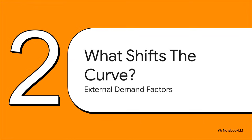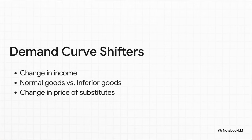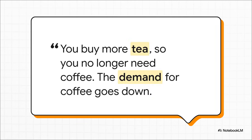So if a price change doesn't shift the curve, then the obvious next question is: what does? What are these mysterious external factors powerful enough to completely redraw the demand line? Here are the main culprits. A big one is a change in your income — for most things, what we call normal goods, if you get a raise, you buy more of them and your whole demand curve shifts to the right. The opposite is true for inferior goods. Another great example is substitute products. Think about tea and coffee — the classic substitutes. If tea suddenly gets way cheaper, a bunch of people will start buying more tea instead of coffee. So their overall demand for coffee just drops. And here's the punchline: the price of coffee didn't change at all, but the demand for it went down. That is a shift of the entire curve to the left.